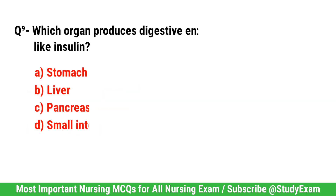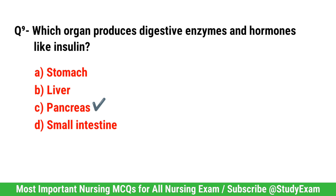Question No. 9. Which organ produces digestive enzymes and hormones like insulin? Correct option is C. Pancreas.